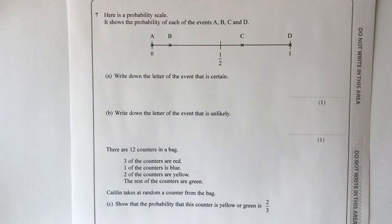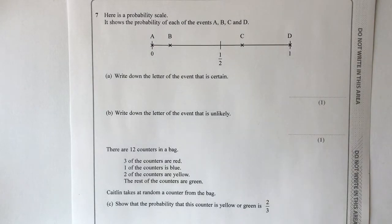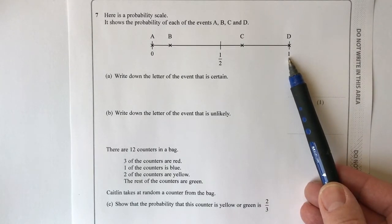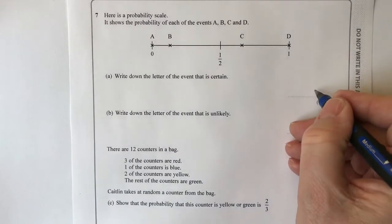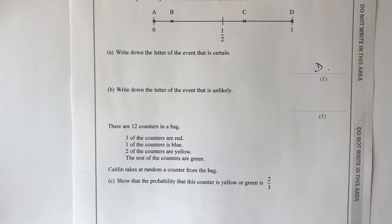Question seven has a probability scale showing the probability of events A, B, C, and D. Part a asks: write down the letter of the event that is certain. In probability, a certainty is represented by one — the far end of the scale — so the answer is letter D.